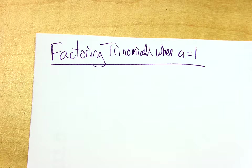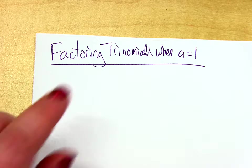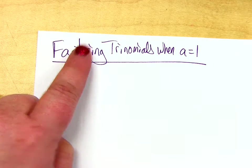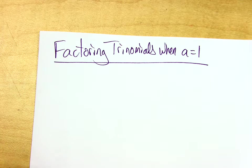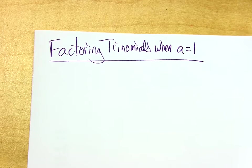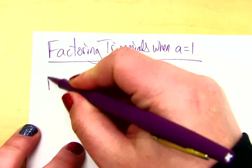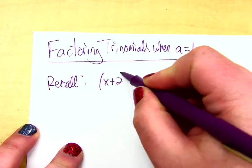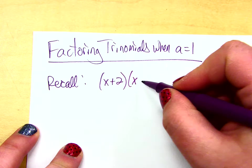Today we are factoring trinomials when a is equal to 1. I'm going to explain a little bit more about what this means in a minute. But before I get into this, I just want to show you kind of what we'll be doing. If I asked you to do this, x plus 2 times x minus 5.